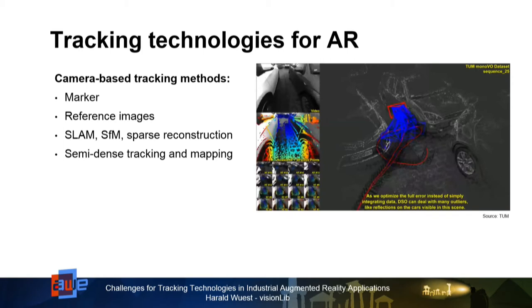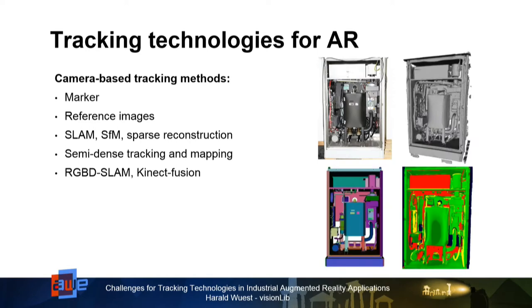A couple of years ago there were direct methods for tracking. The difference is that there are no features anymore — for feature-based tracking there always needs to be a well-structured scenario and nicely textured objects. For direct methods, semi-dense tracking and mapping can be carried out, which works much better for sceneries that are not well-textured, especially in industrial environments. We also have RGBD SLAM, starting with the Kinect Fusion, where we did depth-based camera tracking. This is a very good option if we have a CAD model that can be aligned in the depth image to estimate camera position and orientation, to add virtual content exactly at that position in the real world.